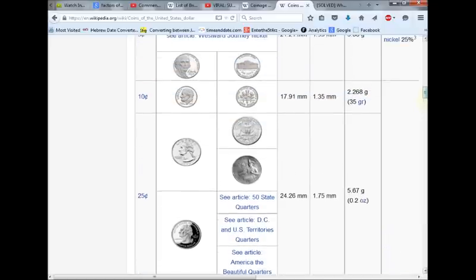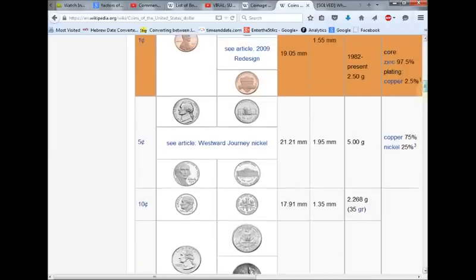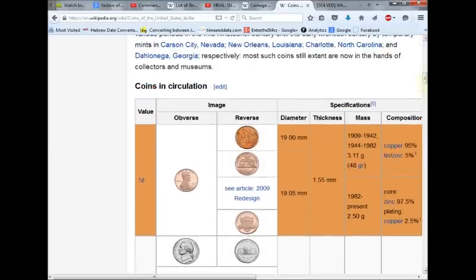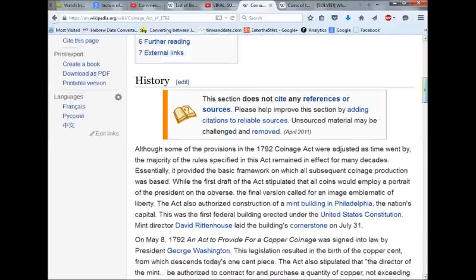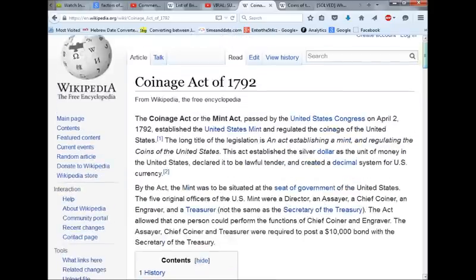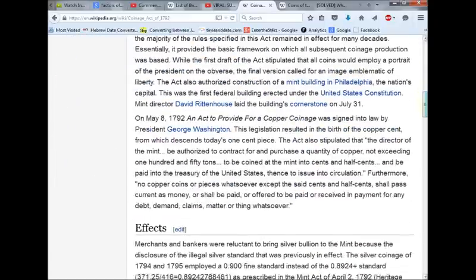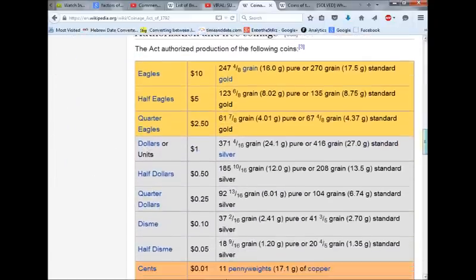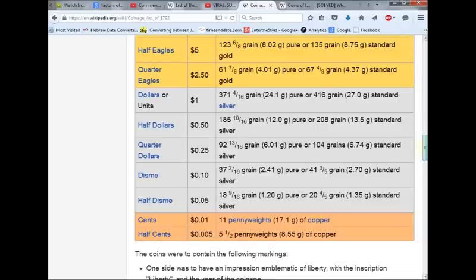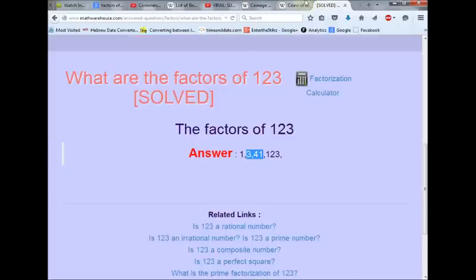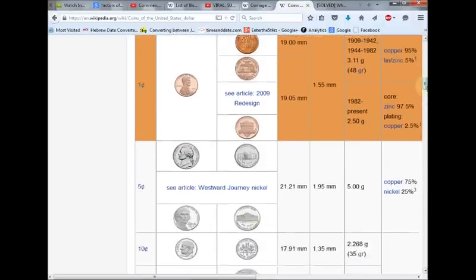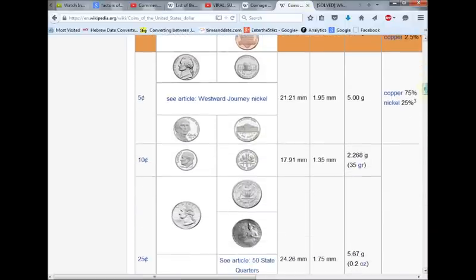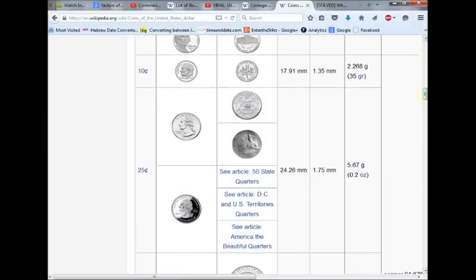So you begin to ask yourself, why is the US currency, the original US coinage from the 1792 Act of 1792, add up to basically the British coinage that is current, the 123? And you've got to be wondering why the American coinage adds up to $1.91 long before 9-11 would ever happen.